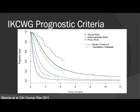The International Kidney Cancer Working Group also developed a set of prognostic criteria. They are more complex and use many more different prognostic criteria, making them a little harder to use. Again, you can see favorable, intermediate, and poor risk populations. The solid lines represent the immunotherapy era and the dotted lines the targeted therapy era, and you can see a difference in overall survival across all subgroups.